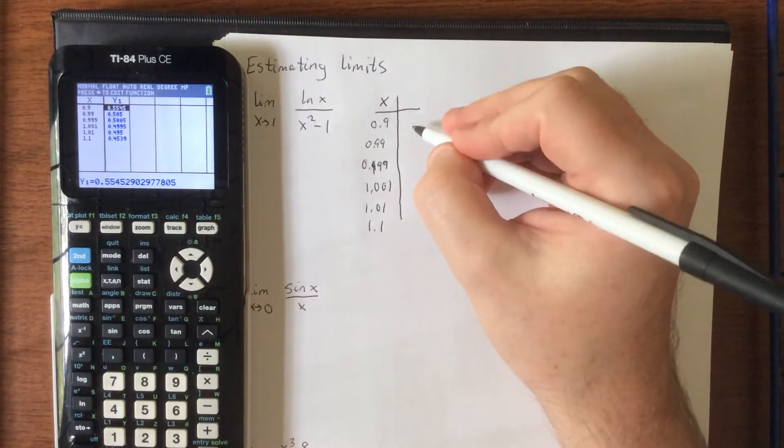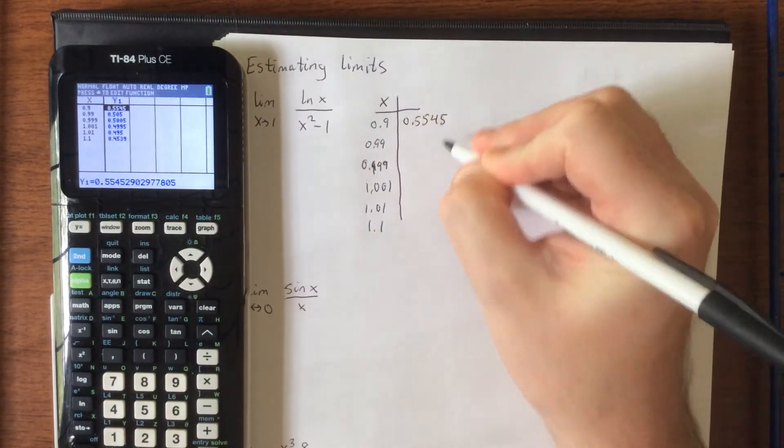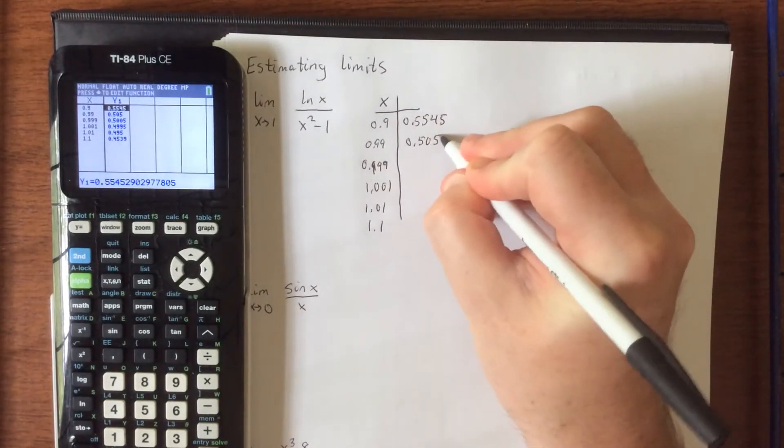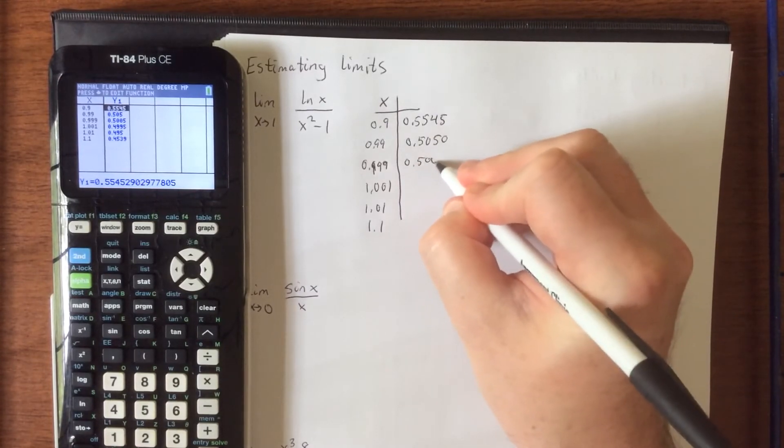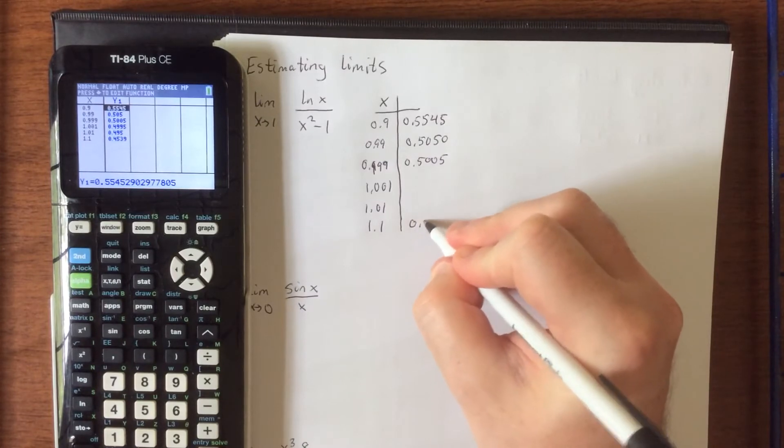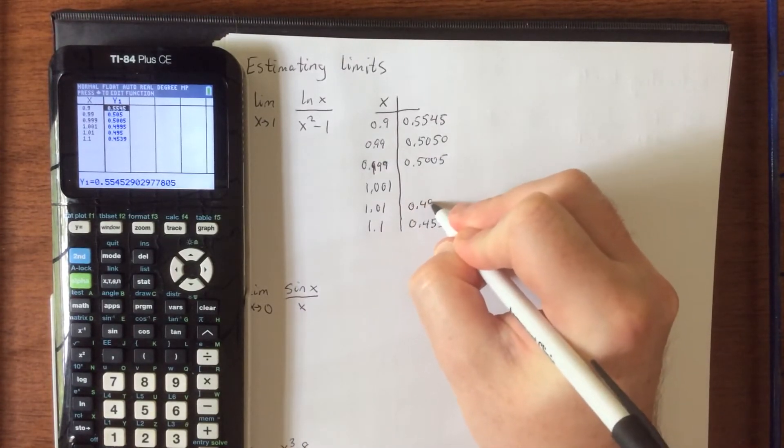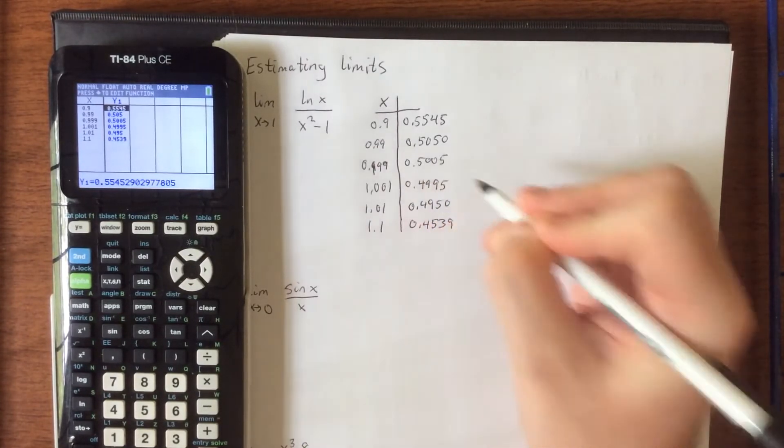So at 0.9, this is 0.5545. At 0.99, looks like to the fourth decimal place it's going to be 0.5050, and then 0.5005. On the other side, 0.4539, 0.4950, and 0.4995.